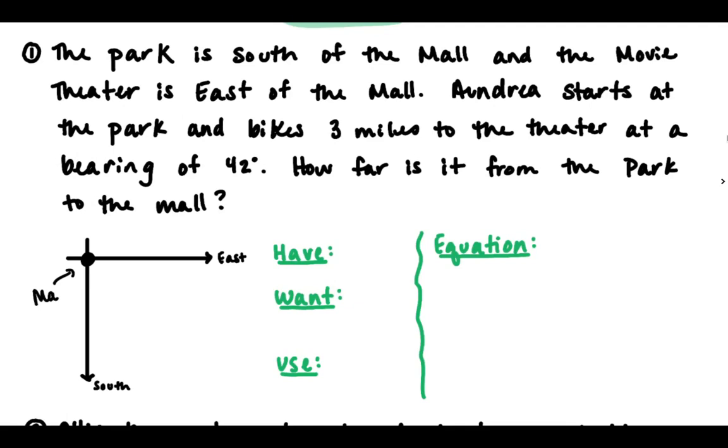And then the park is south of the mall, so that means the park would be somewhere down here, right? And the theater was east of the mall, so that puts the theater somewhere over here. And with that, we get a triangle that we can then use to solve this problem.